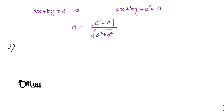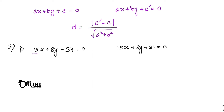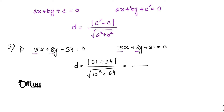For question 3(i): lines are 15x + 8y - 34 = 0 and 15x + 8y + 31 = 0. The coefficients of x (15, 15) and y (8, 8) are equal, so we apply the formula: d = |31 - (-34)| / √(15² + 8²) = |65| / √(225 + 64) = 65 / √289 = 65/17 units.